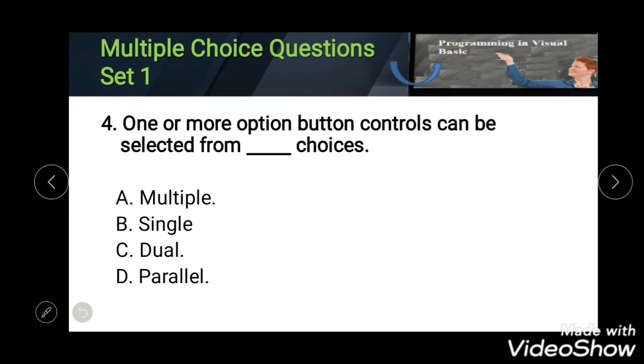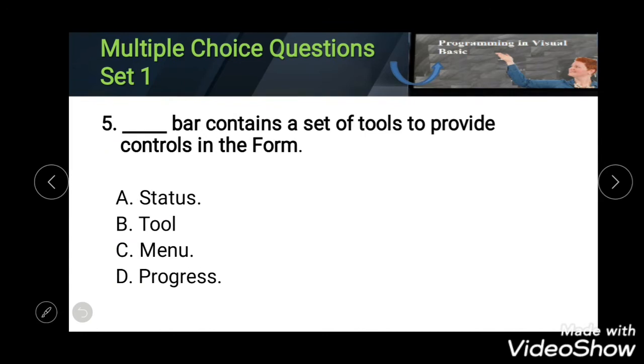Fifth: blank bar consists of a set of tools to provide control in the form. Options are Status, Tool, Menu, and Progress. The correct option is Menu.